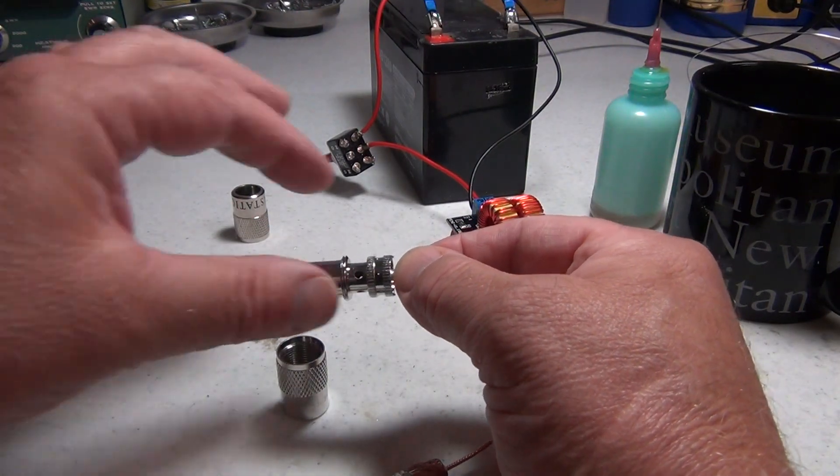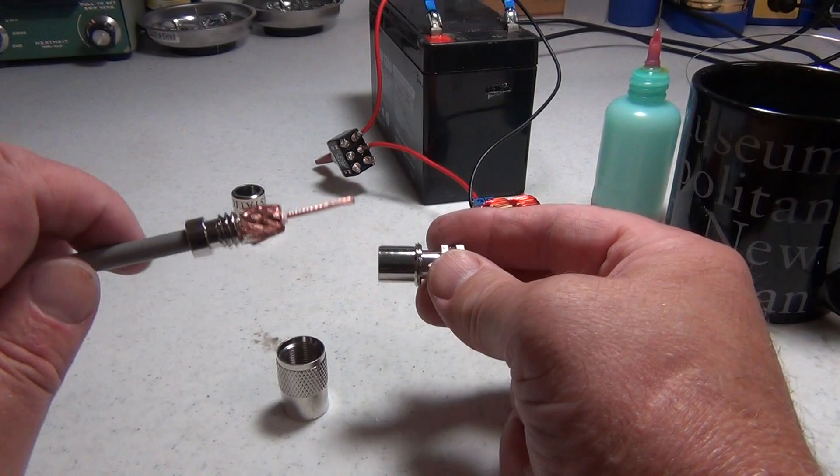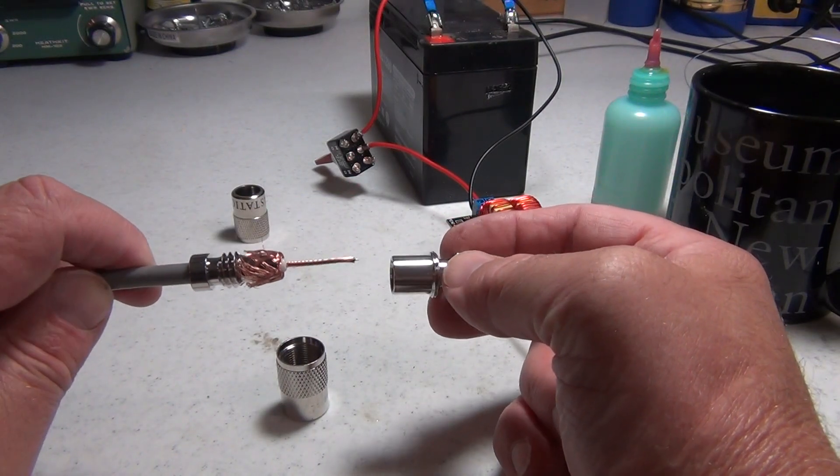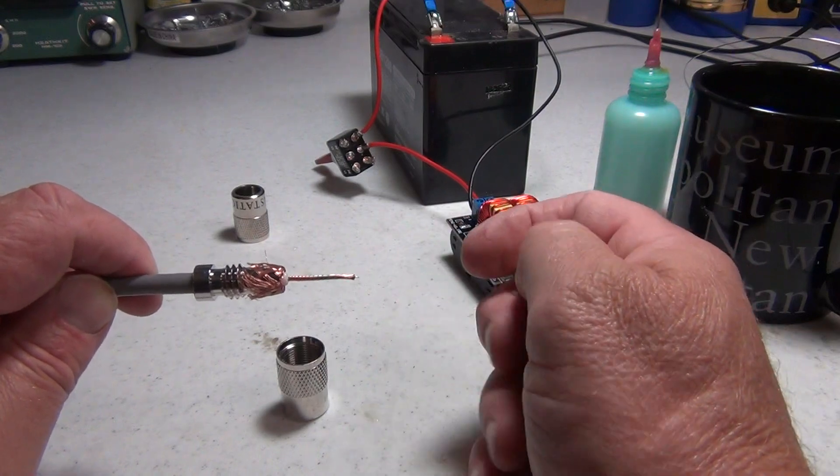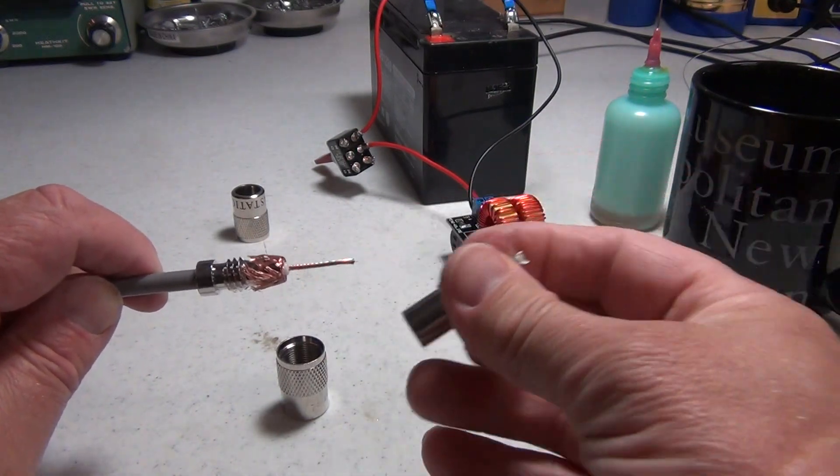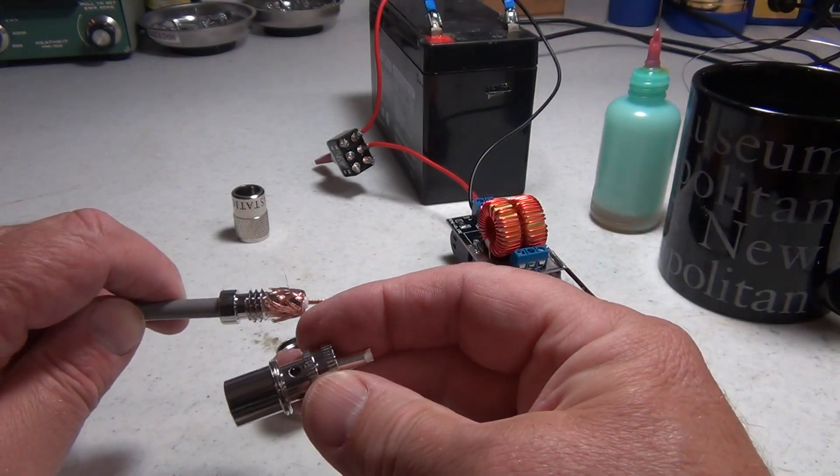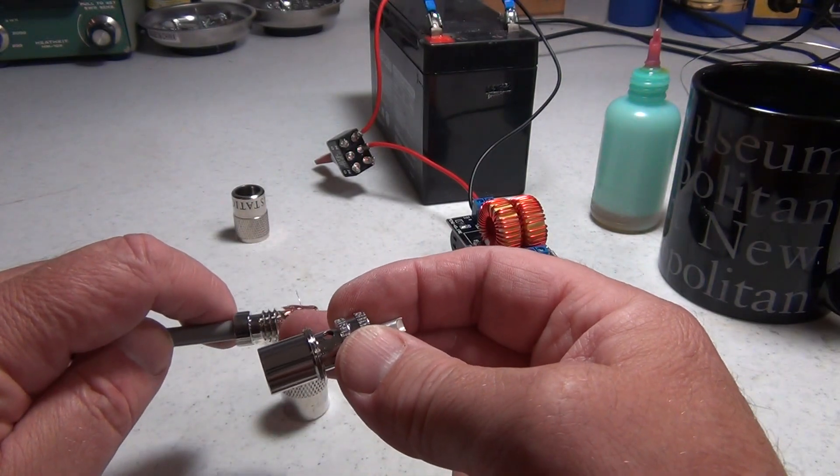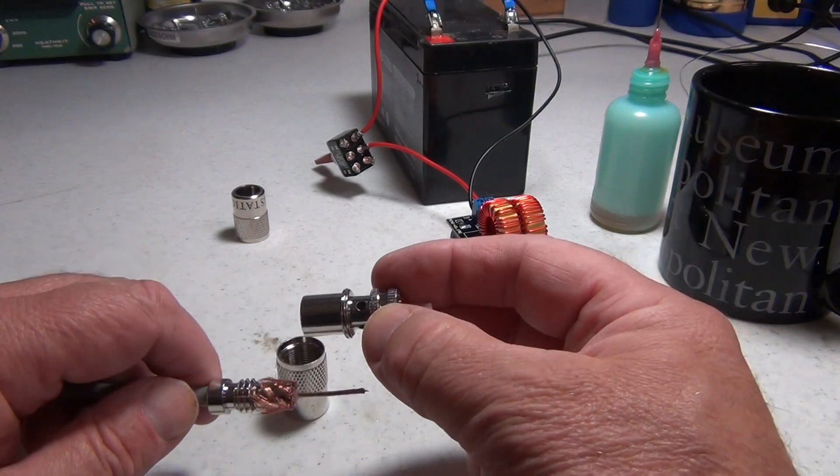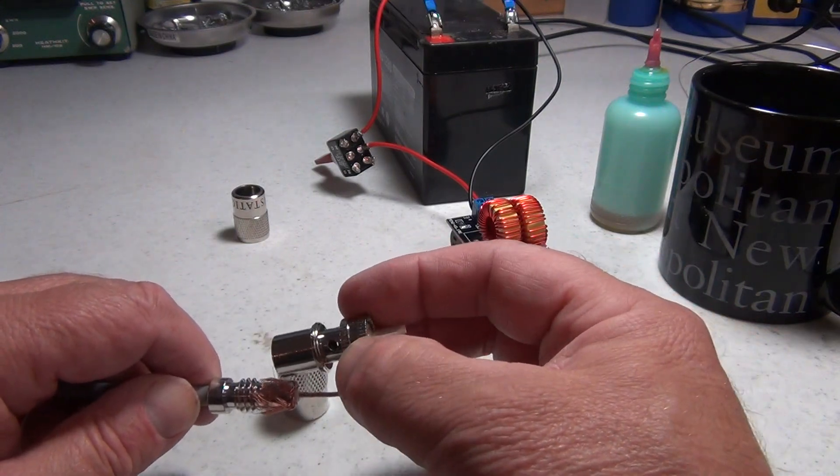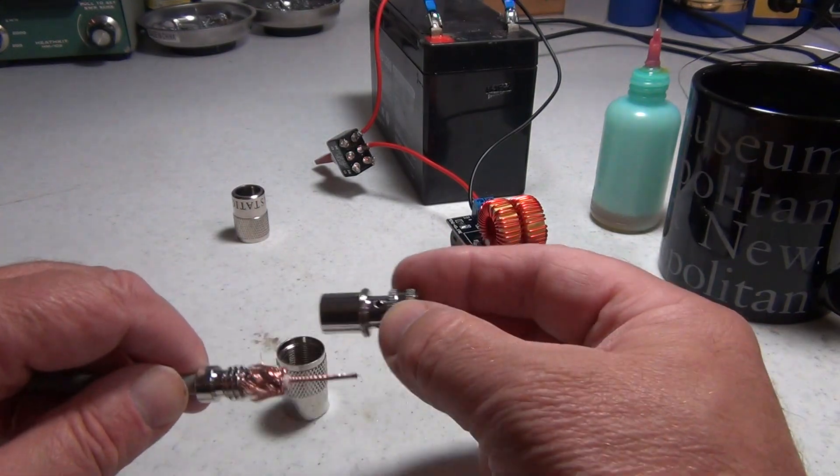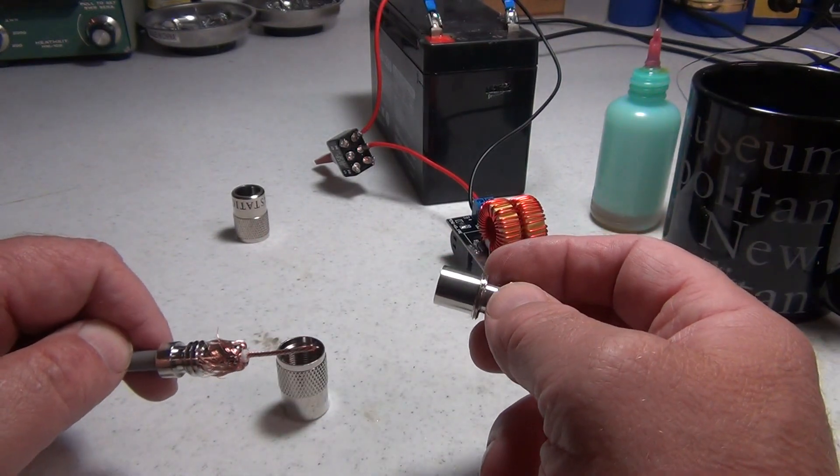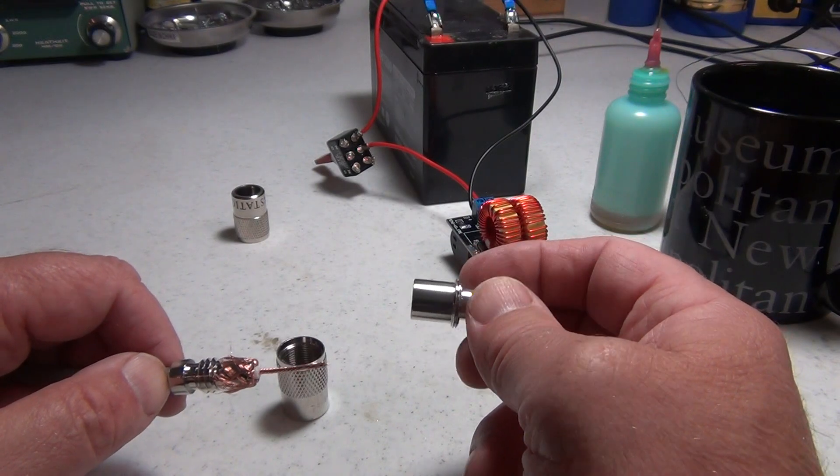The hardest thing is soldering a connector that has a reducer on it. This is a reducer for RG8X. The whole problem is thermal mass and thermal inertia. When you've got this much metal—the connector shell, the shell around the cable, and the reducer—it gets really hard to get enough heat in there to flow the solder nicely without melting the dielectric.